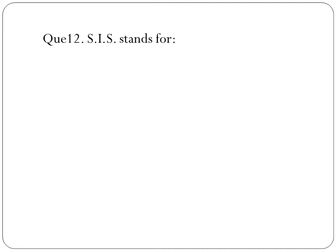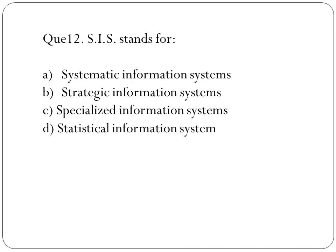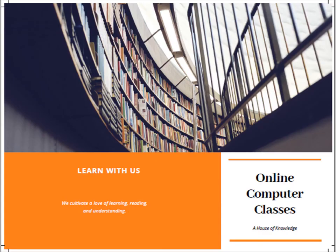The last question: SIS stands for what? Whether it is systematic information system, strategic information system, specialized information system, or statistical information system. The right answer is strategic information system. Thank you for watching the video. I hope you liked the questions. Please do like, subscribe, and share the video. Links for all my channels — Instagram, Facebook and others — are in the description. You can also view my previous videos of MIS. All the best.